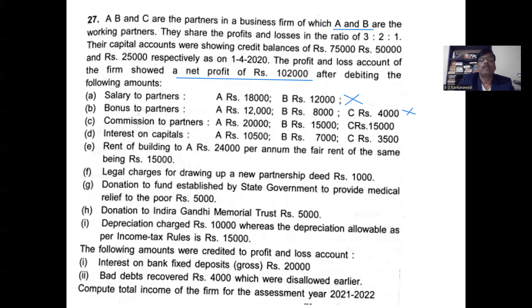Commission to partners: A gets 20,000, B gets 15,000, C gets 15,000 — total is 50,000, and commission is also disallowed. Next, interest on capital: first partner 10,000, second partner 7,000, third partner 3,500.